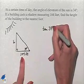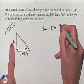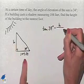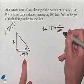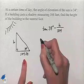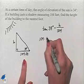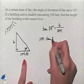The tangent of 34 degrees is going to equal the side opposite, H, divided by the side adjacent, 104. Multiplying by 104 on both sides of the equation allows us to solve for H.